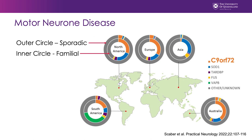The first thing you may have noticed is that the genetic contribution to familial disease across different continents is quite different. For example, in Asia, within families, the majority of patients will have a mutation in a gene known as SOD1. Whereas in Australia, the majority of people with a family history of motor neuron disease will carry a mutation in a gene known as C9ORF72. Notably, the C9ORF72 gene is also observed in people with sporadic motor neuron disease, meaning mutations in this gene can contribute to a sporadic onset of motor neuron disease.